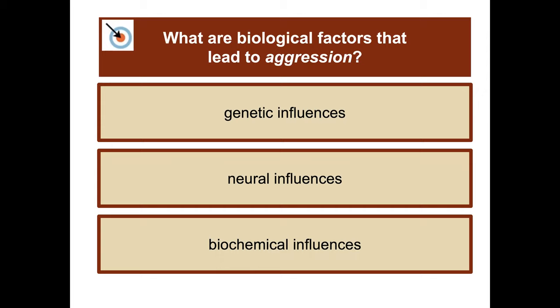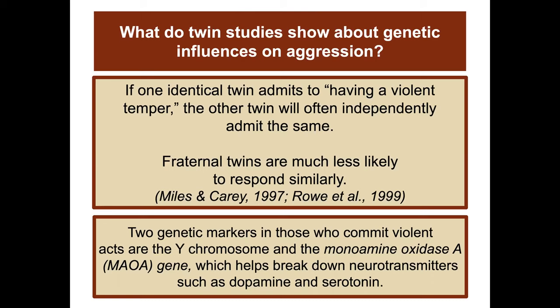What are some of the biological factors that lead to aggression? Genetic influences, neural influences, and biochemical influences. Twin studies show that if one identical twin admits to having a violent temper, the other twin will often independently admit the same. Fraternal twins are much less likely to respond similarly, showing that there is a pretty strong genetic influence.